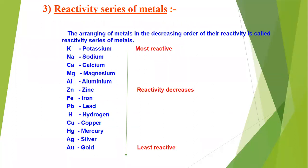Next is the Activity Series of Metals. In this series, metals are arranged in decreasing order of their reactivity. Metals arranged above hydrogen in the series are more reactive than hydrogen, and metals below hydrogen are less reactive than hydrogen. This series is also the basis of displacement reactions.